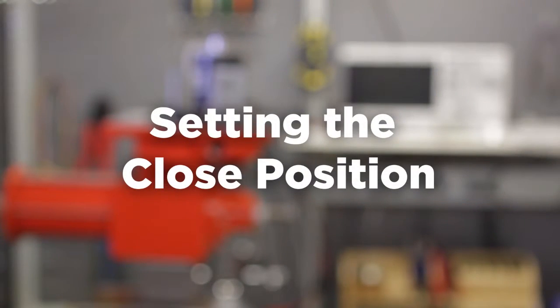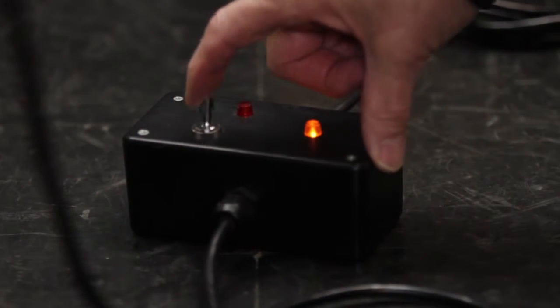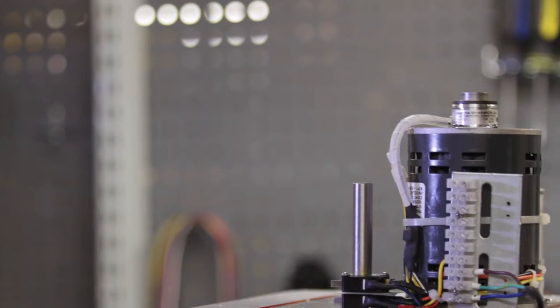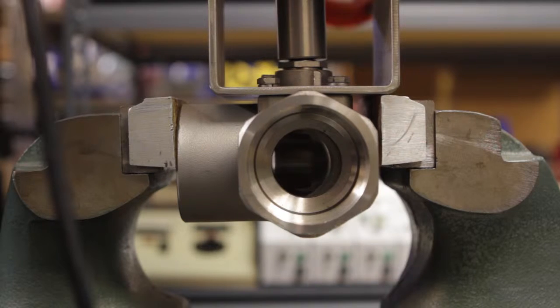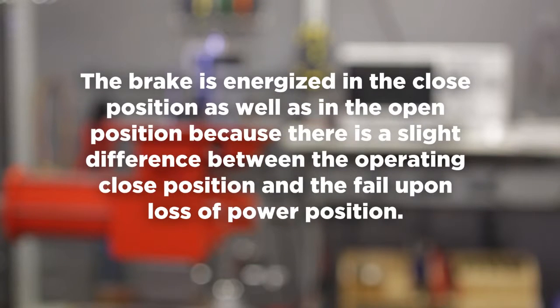To set the closed position, apply power to terminals one and three, and the actuator will begin to run in the clockwise direction. When the actuator reaches the closed position, the limit switch changes state and de-energizes the motor while energizing the brake. The brake is energized in the closed position as well as in the open position because there is a slight difference between the operating closed position and the fail upon loss of power position.